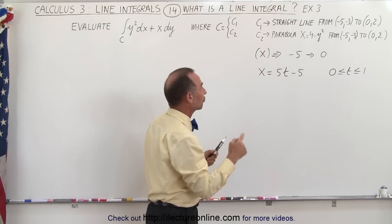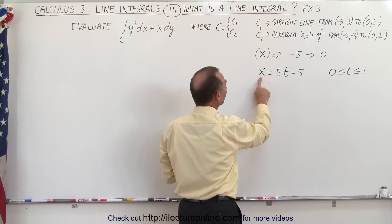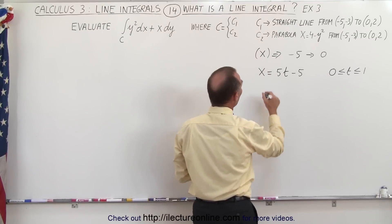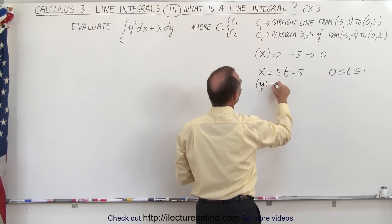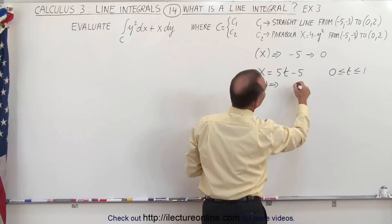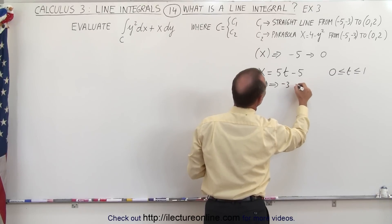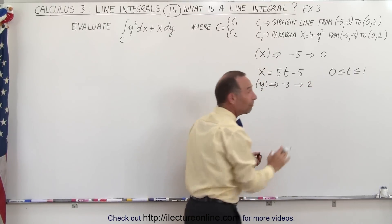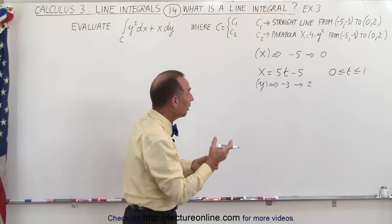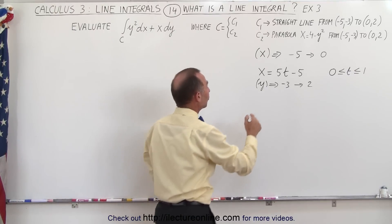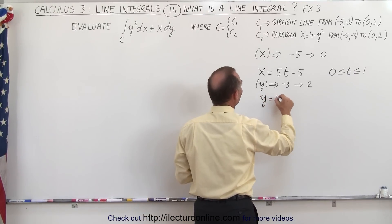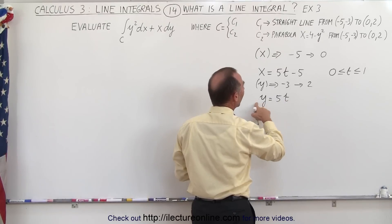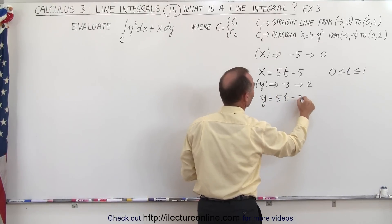So that is a good transformation from the variable x to the parametric variable t. We can do the same for y. y will change from a minus 3 to a plus 2. Again, that's a change of 5, which means when t changes 1, y changes by 5, so I have y is equal to 5 times t, but when t is equal to 0, y should be negative 3, so I subtract 3 from that.